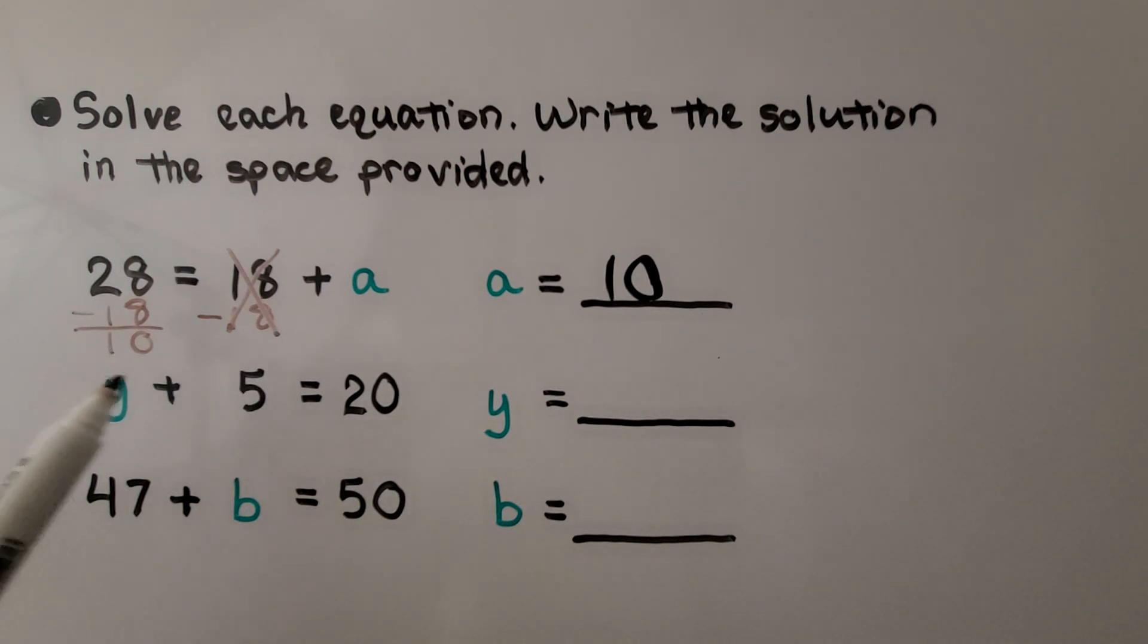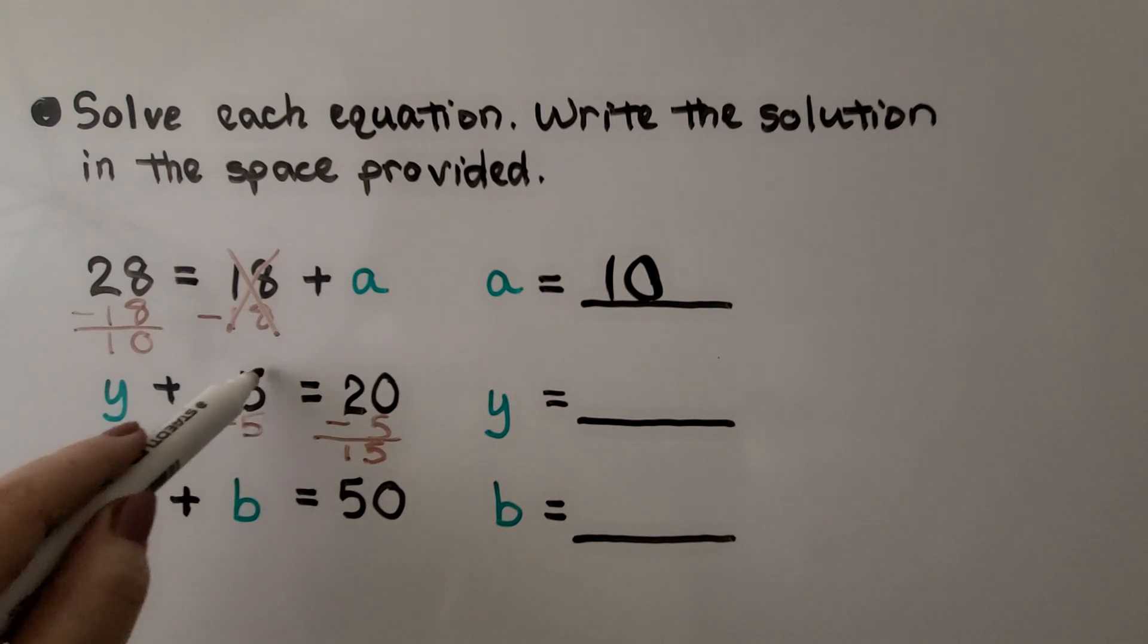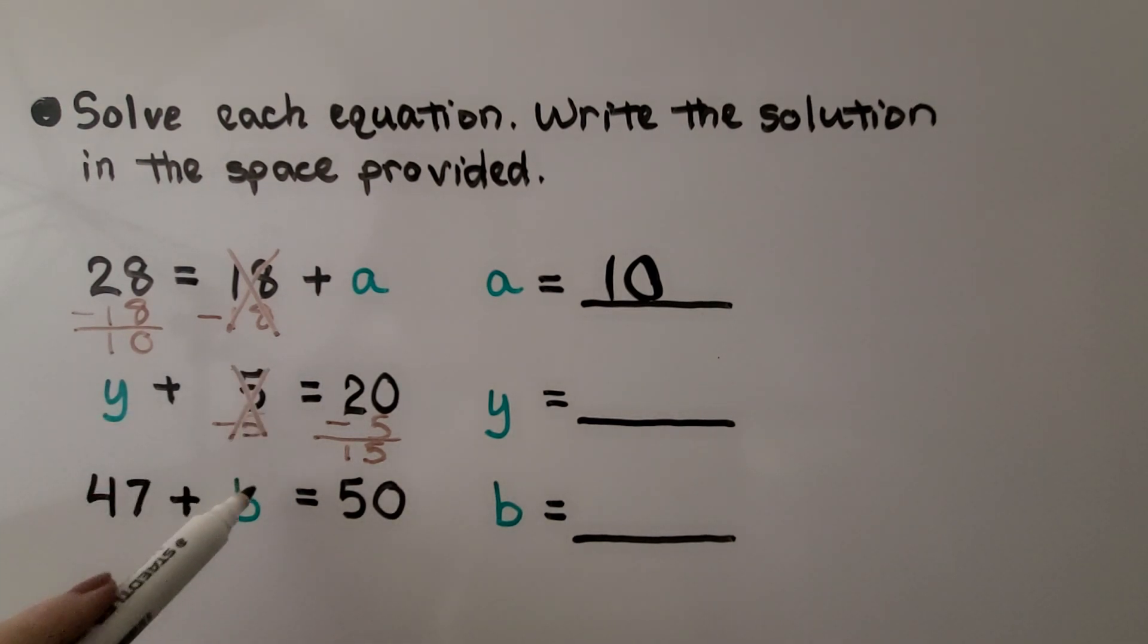Here we have y plus 5 is equal to 20. What number plus 5 is equal to 20? We can remove this 5 from this side and a 5 from this side. And that's going to give us a 15. We've removed this 5 by subtracting it. We have y is equal to 15.